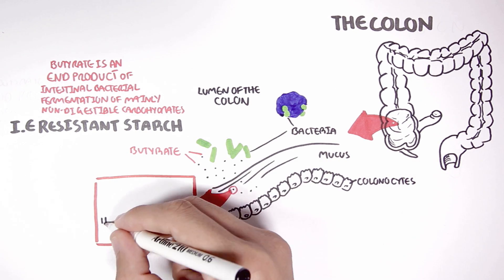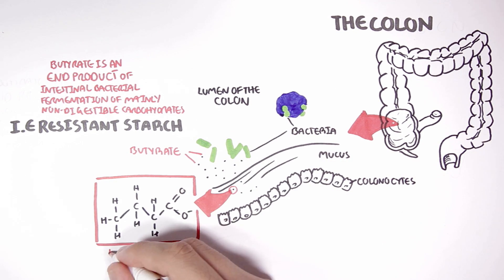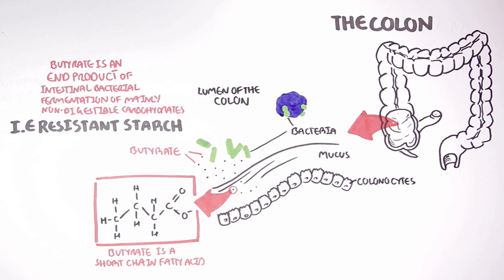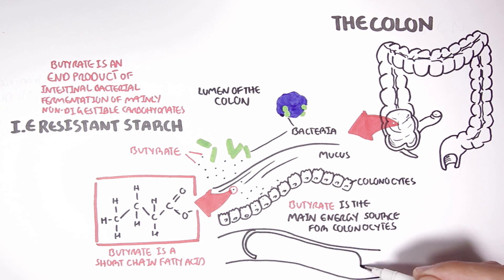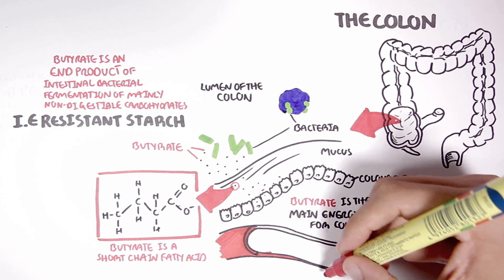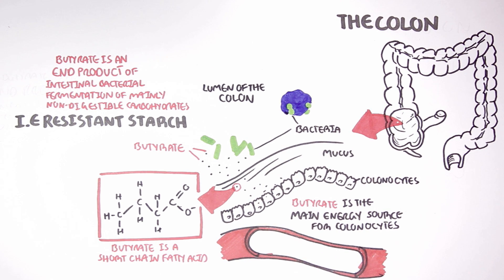Butyrate is a four-carbon short-chain fatty acid. Butyrate is absorbed by the colon cells and is the main source of energy for these colon cells. Therefore, there are lower concentrations of butyrate that enter the bloodstream compared to other short-chain fatty acids such as acetate and propionate.